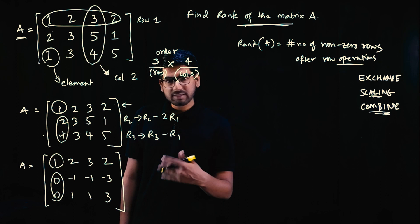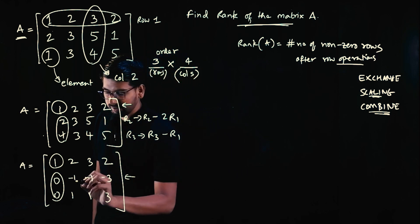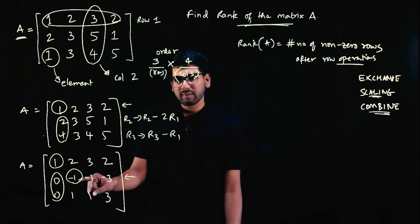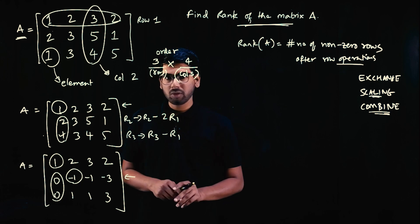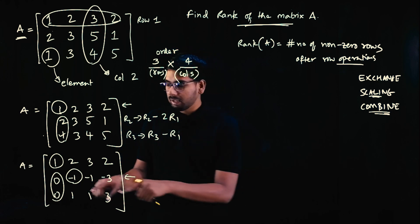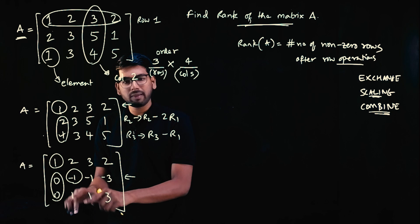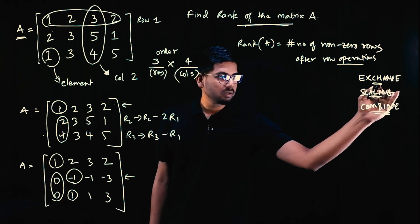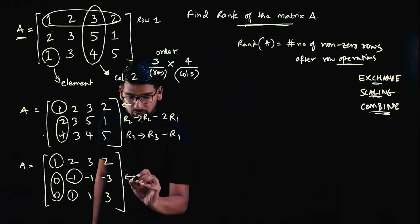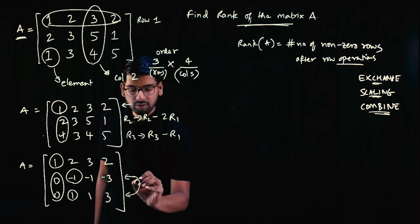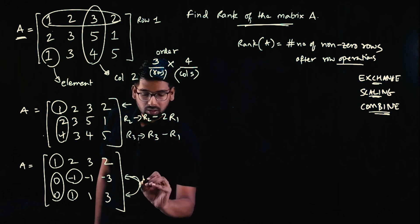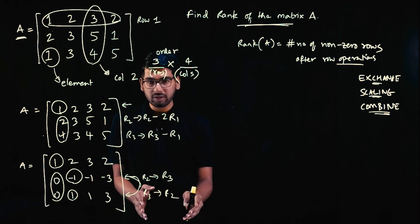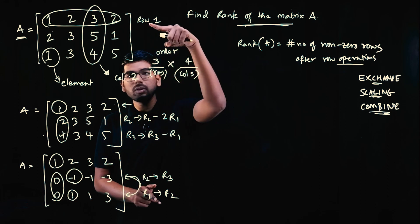The second element of the second row is minus one, so we exchange rows. Row 2 and row 3 are exchanged: row 2 becomes row 3, and row 3 becomes row 2. The notation for this row exchange uses R2 and R3 symbols.